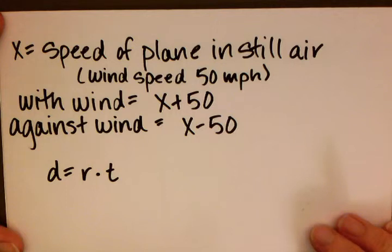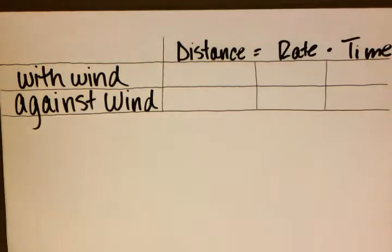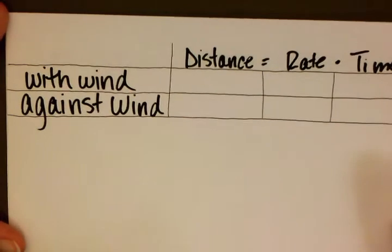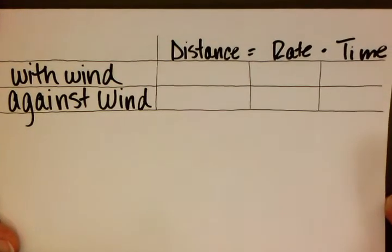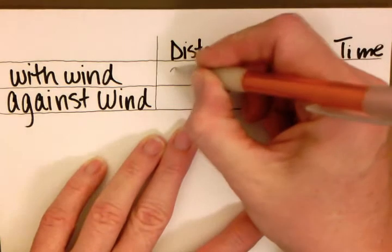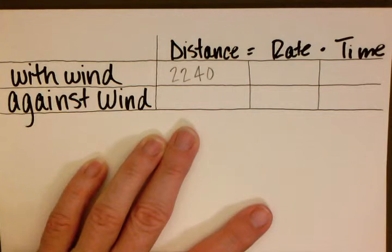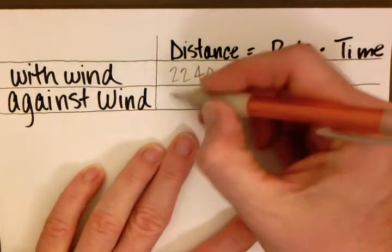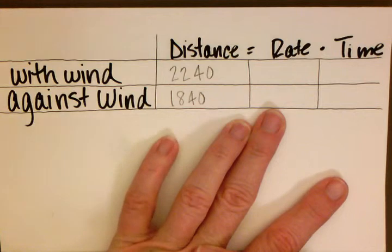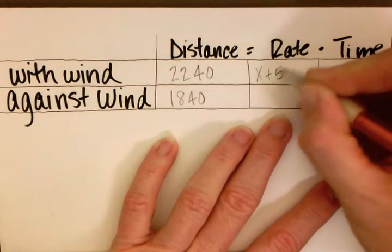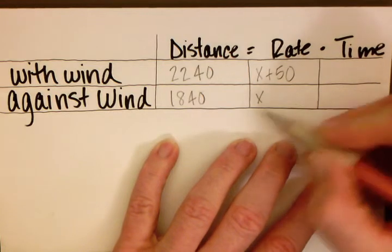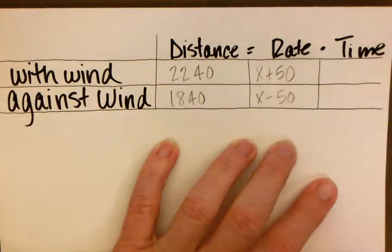This is going to be a distance equals rate times time equation. The best way to do this is to set up a table and fill in the information the question gave us. The distance with the wind is 2,240, and the distance against the wind is 1,840. The rate with the wind is still air speed plus 50 miles per hour, and the rate against the wind is still air speed minus 50 miles per hour.